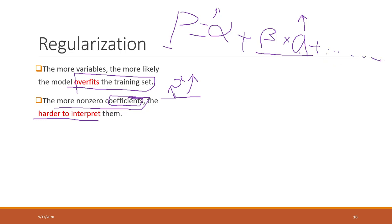With multiple variables, you have to say 'when everything else is kept equal and the area increases, the price will also increase.' So when you have multiple variables, you tend to overfit your training set and also end up with a more complicated model that is harder to interpret.